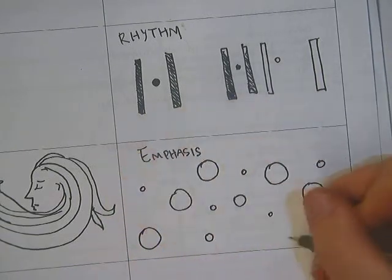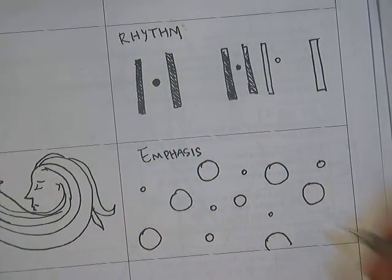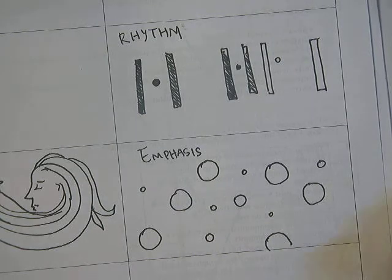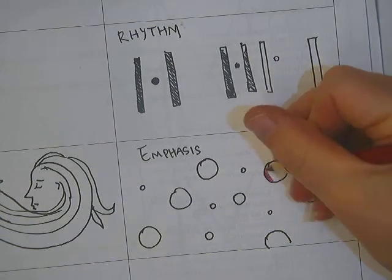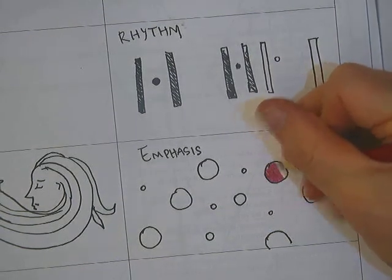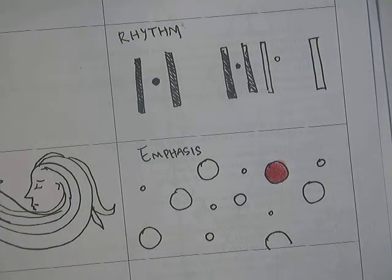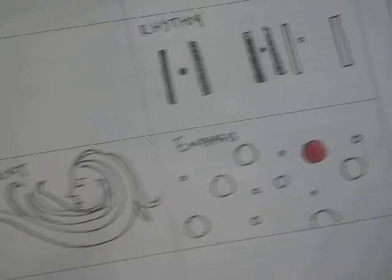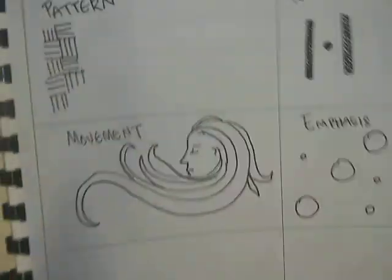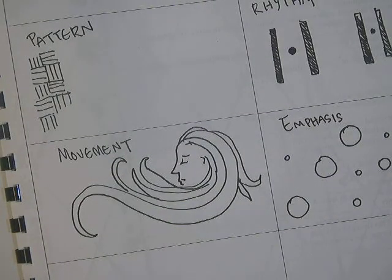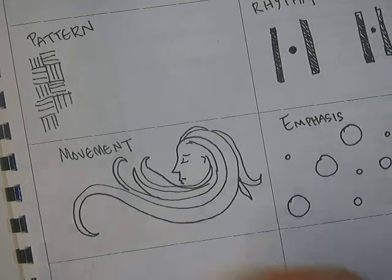But I can make it stand out by using a contrasting of colors, values, et cetera. So for example, if I color one of these red, my eye is going to immediately go to that red one. So there's an emphasis happening now.